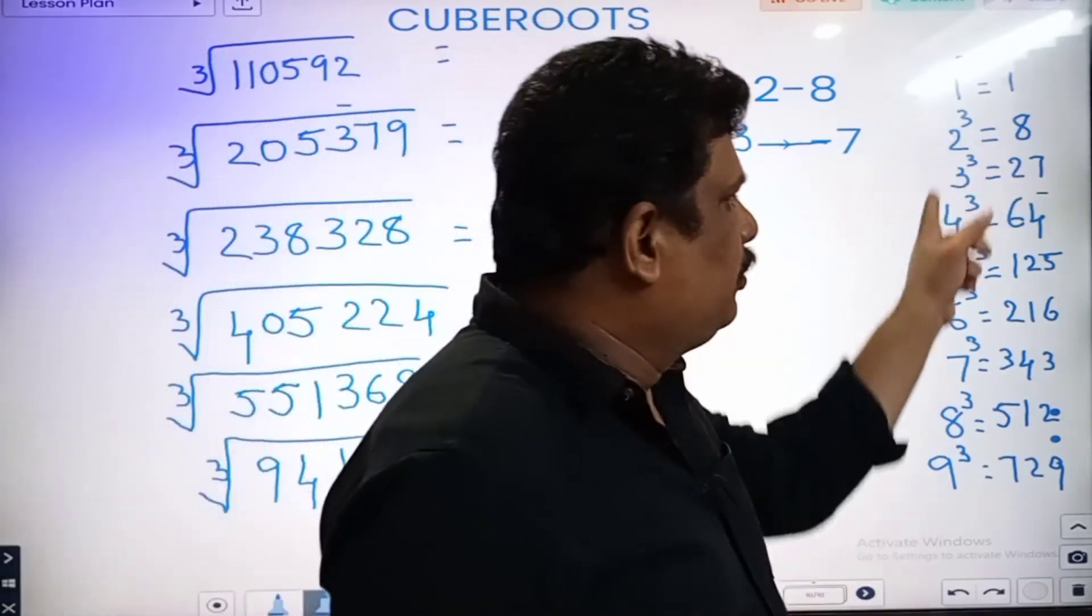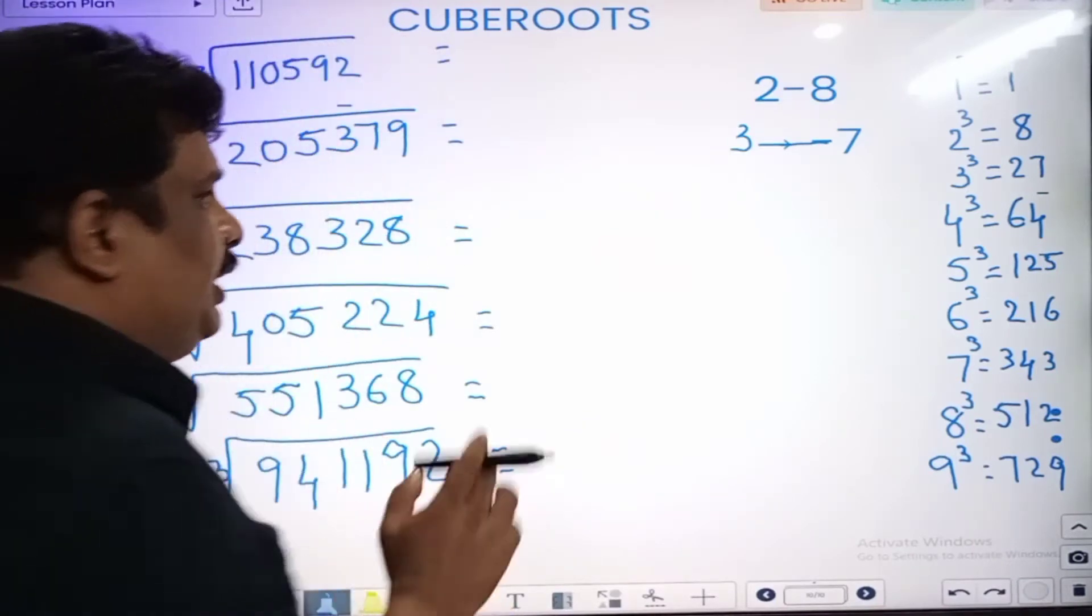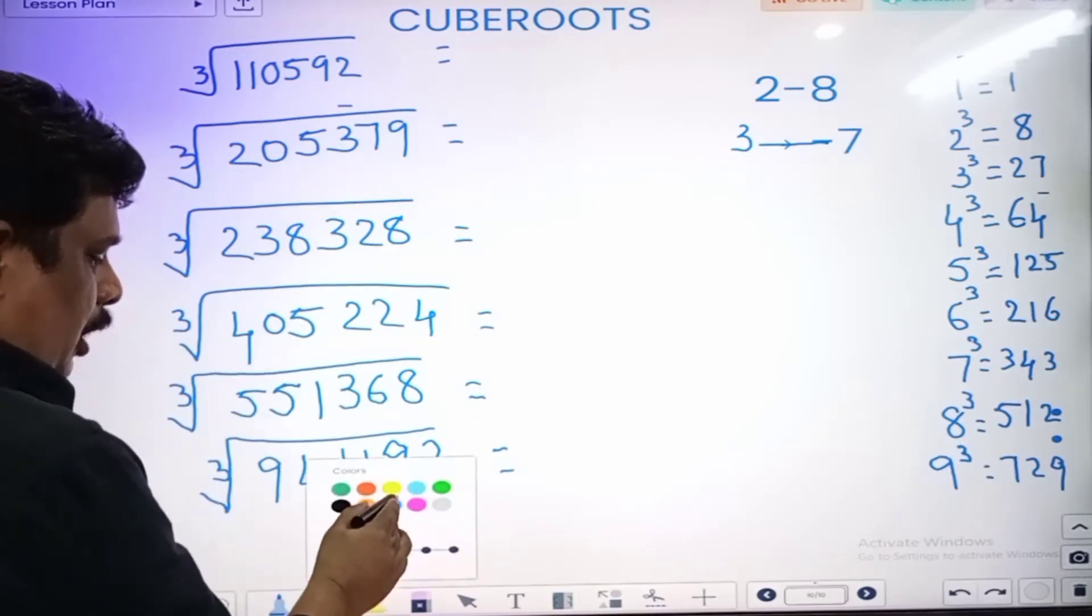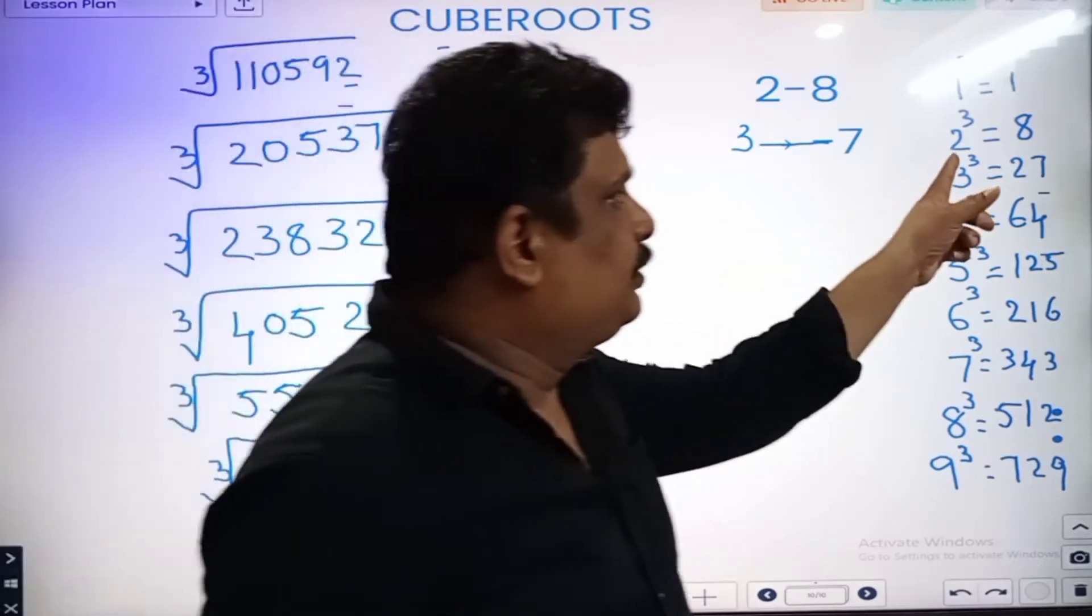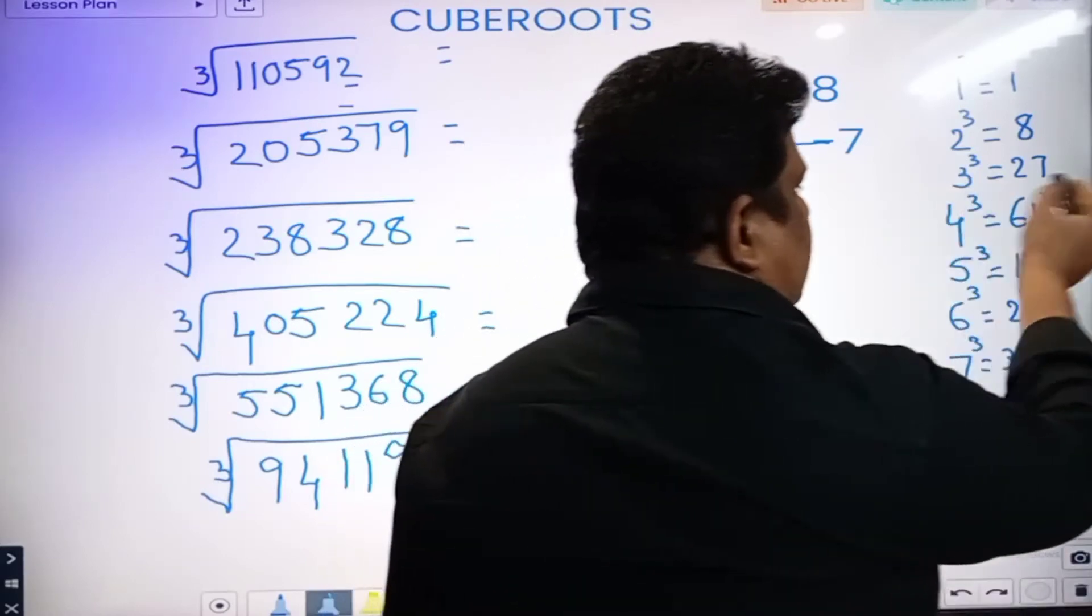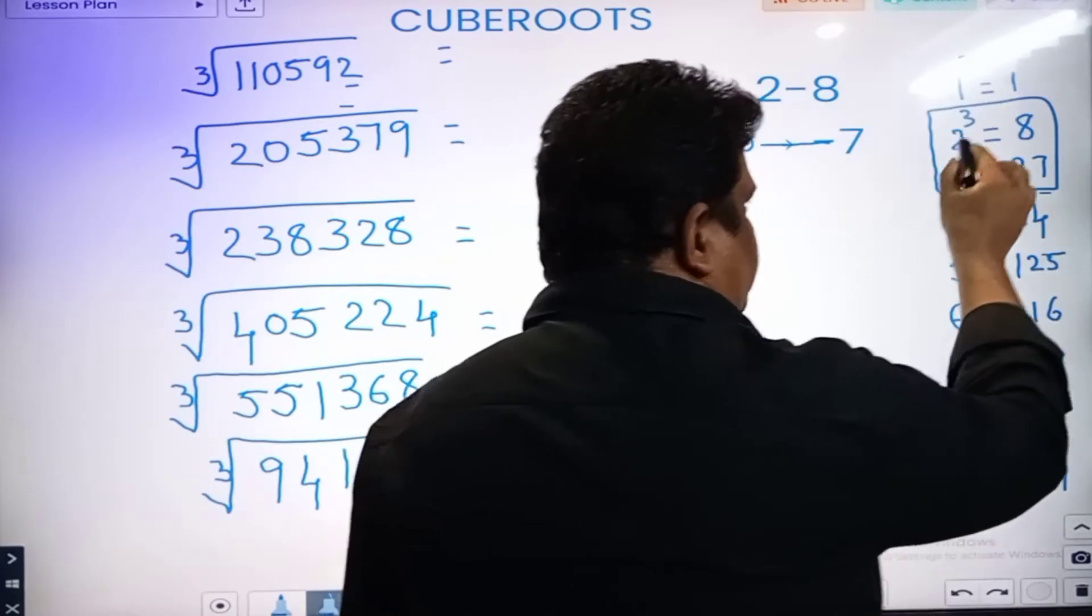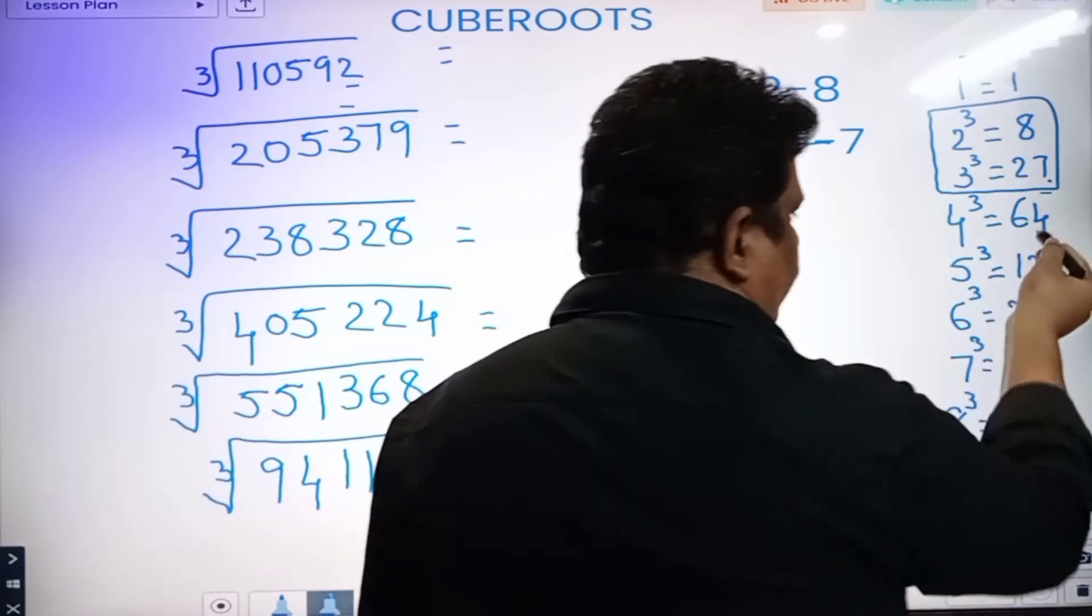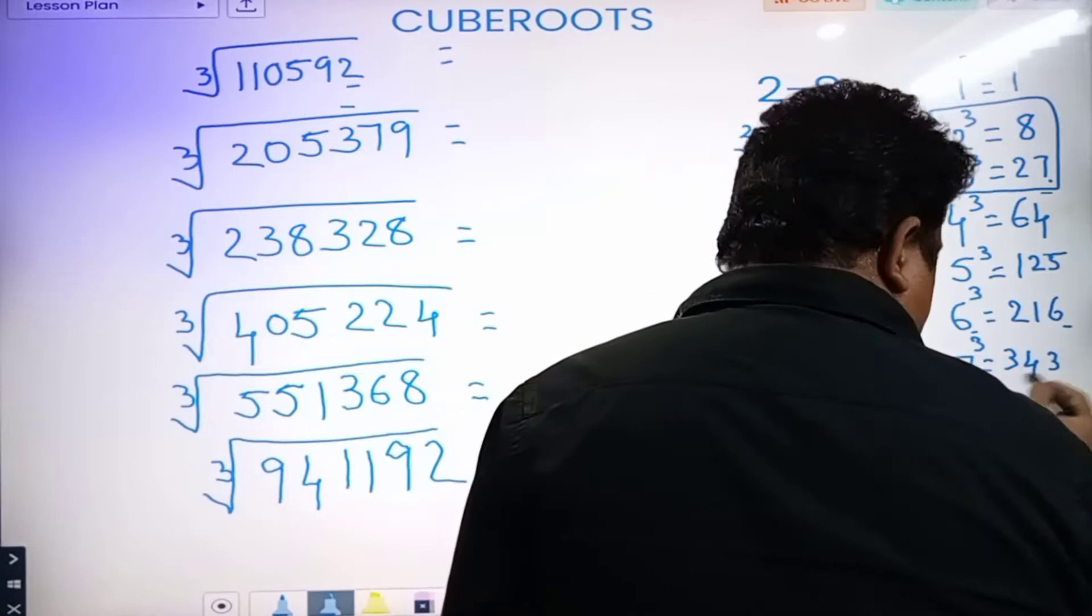1 cube root, 2 cube root, 3 cube root, 4 cube root. Last digit: 1's cube is 1, 2's cube is 8, 3's cube is 7. 2 cube is 8, 3 cube is 7. 4 is 4, 5 is 5, 6 is 6. Last digit: 7 is 3, 8 is 2.